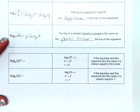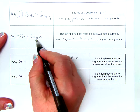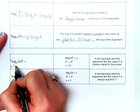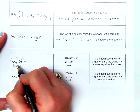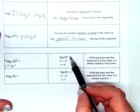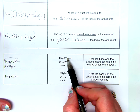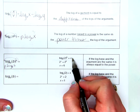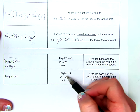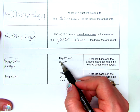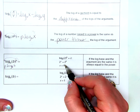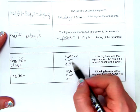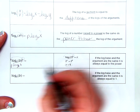The bottom two properties: log base B of b to the p power. Using the power rule, p comes down in front as a multiplier, giving p log base B of b. For example, if we had log base 2 of 2 to the 6th power and rewrote it in exponential form, it would be 2 to the x power equals 2 to the 6th power, so x has to equal 6. The 6 comes down in front as a multiplier, leaving p.